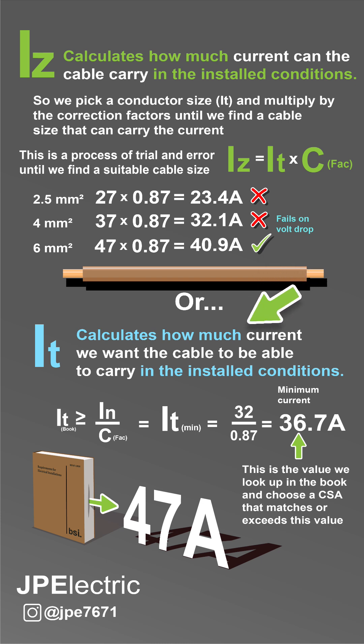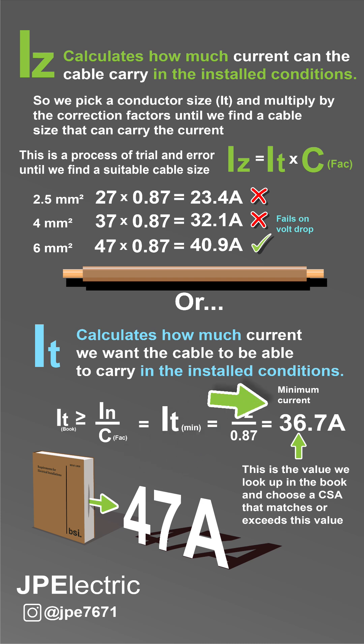So you have the method to find IT. We calculate how much current we want the cable to carry. IT is the book value. This formula — IT greater than IN divided by correction factors — will give you IT minimum. This is the minimum current that we need the cable to be able to carry. We look through the book, going up to 6mm cable which can carry 47 amps.